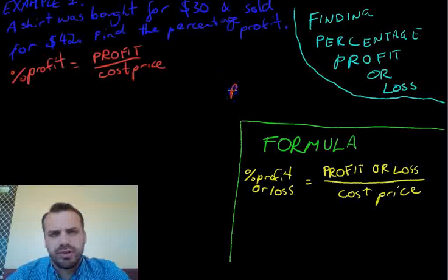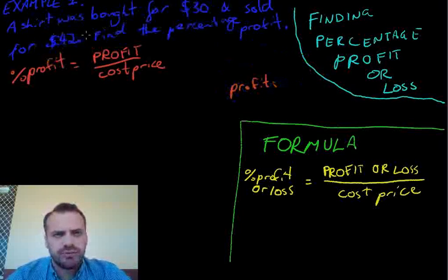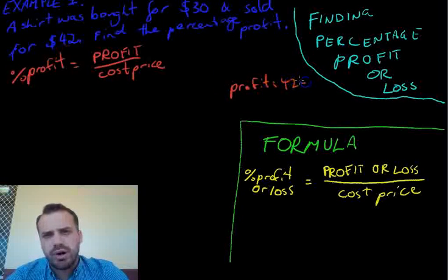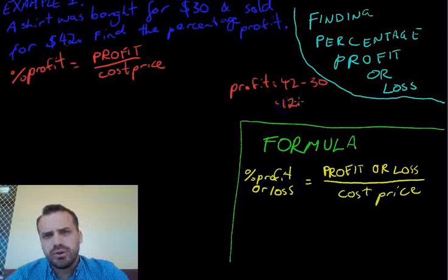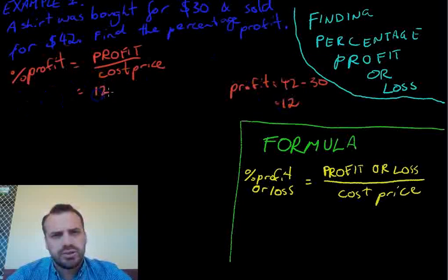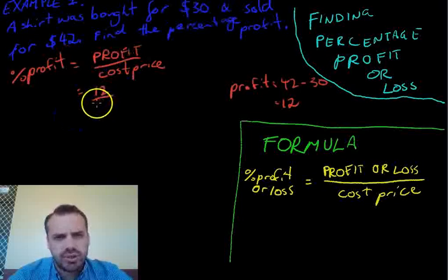In order to figure out the profit, that's pretty straightforward. It's what we sold it for, $42, minus what we bought it for, $30. So we've made a profit of $12. Our profit is $12. Our cost price is $30.